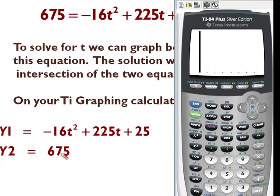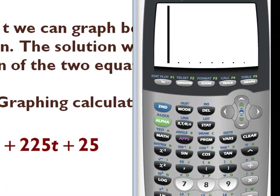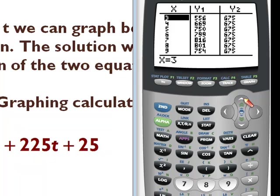Notice this Y2 is 675, so my y max has to be at least 675. A good way to select a proper window would be to press 2nd, table, and let's see what happens. When x is 0, my y is 25. When x is 0, y is 25, or at time 0, the rocket's 25 feet in the air. Now if we scroll down a little bit, you'll notice when time is 8 seconds, the rocket's 800 feet in the air. At 9 seconds, it's 754 feet in the air.